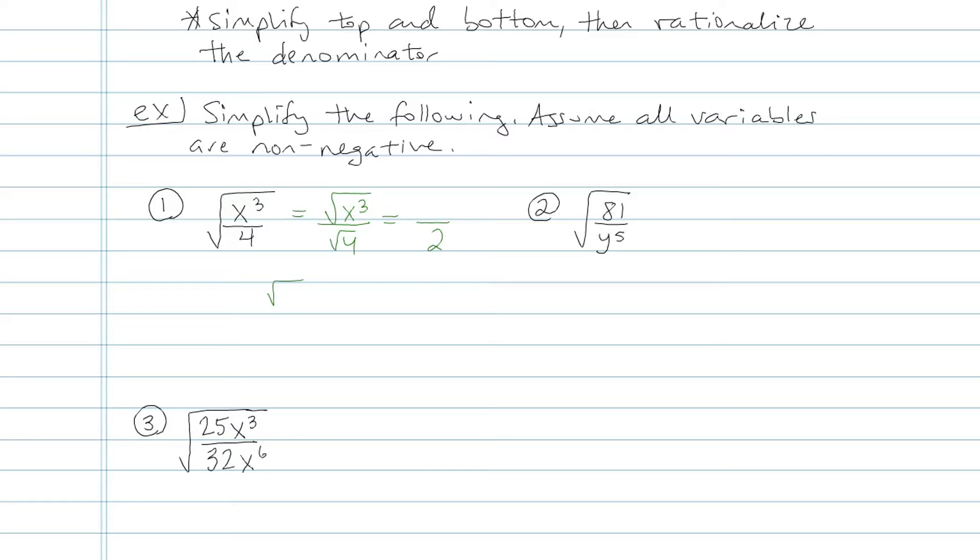Now the top is a little bit trickier. I'm working with square root of x to the third. Well I'm going to think of that as square root of x squared times square root of x because square root of x squared is just plain old x. So that's going to be my top, x square root of x. That cannot be simplified anymore and the denominator doesn't have a radical so I'm done.